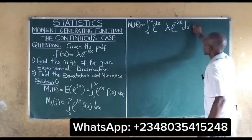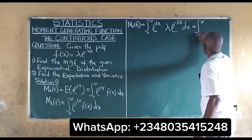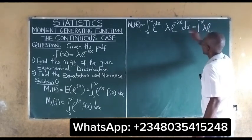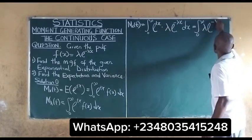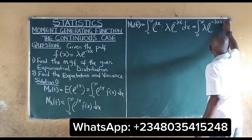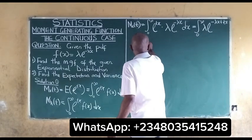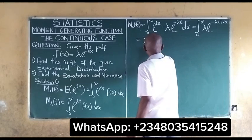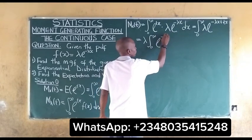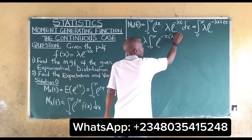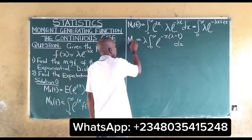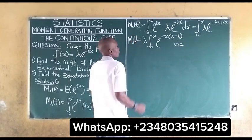The next thing to do is to write this out properly. We combine the exponents: negative λx plus tx. We can factor out x, giving us x(t − λ) in the exponent, so our moment generating function becomes the integral with that combined exponent.